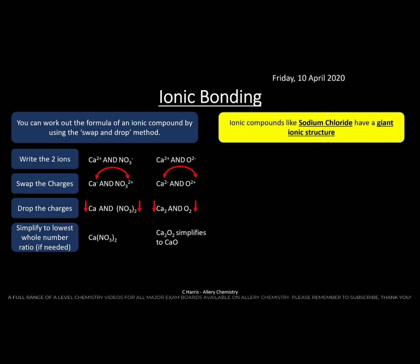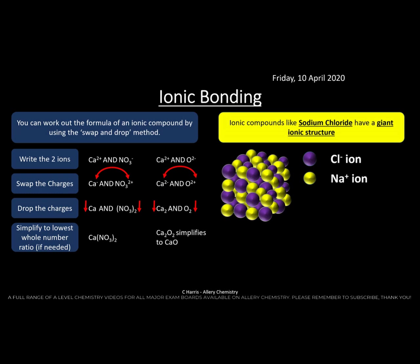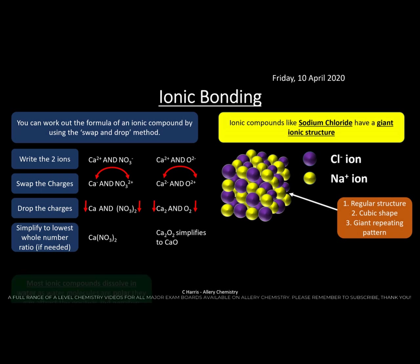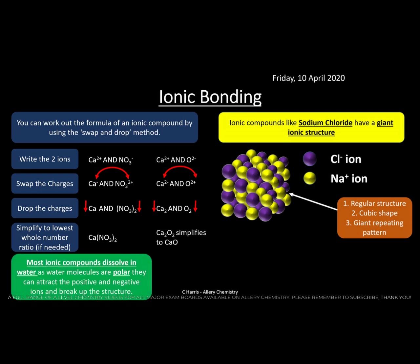All ionic compounds have a giant ionic structure — a big regular arrangement where all the ions clump together. In sodium chloride, Na⁺ ions (yellow) and Cl⁻ ions (purple) are attracted to each other by strong electrostatic forces between positive and negative ions, forming a regular cubic, repeating pattern that extends throughout the entire structure.